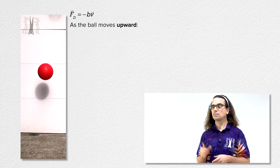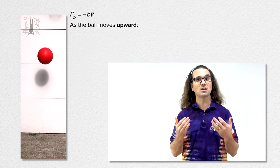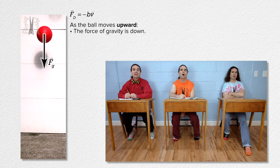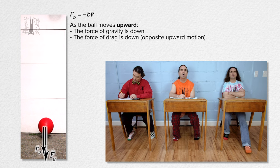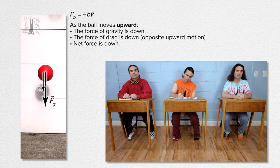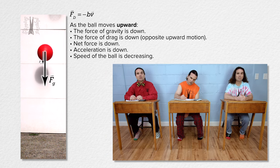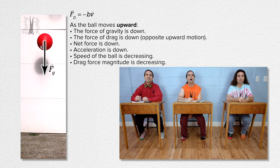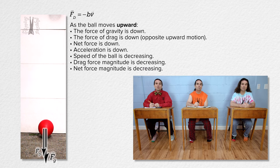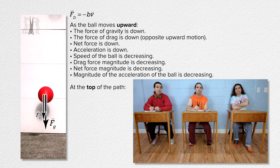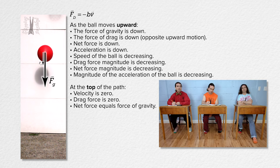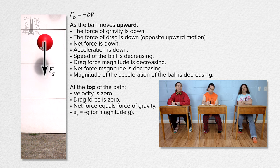Let's look at the ball as it moves upward. The force of gravity is down and the force of drag is opposite the direction the ball is moving, so also down. The net force is down causing a downward acceleration, which means the speed of the ball will decrease. That means the drag force will decrease in magnitude, and therefore the magnitude of the net force — and the acceleration — will also decrease. At the very top of its path, the velocity is zero, so the drag force is zero, and the dodgeball has an acceleration equal to negative g.